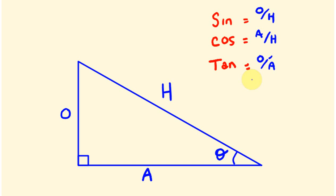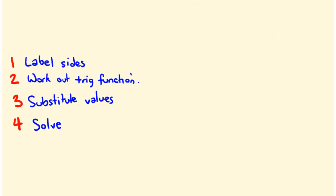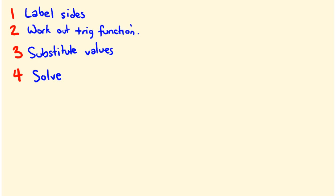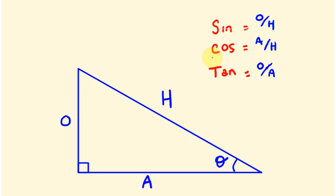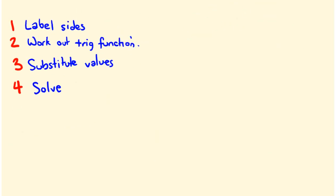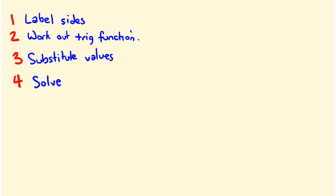So we have theta, and the sides we're going to be playing around with: if we're using the opposite and hypotenuse, we're going to be using sine. Alternatively, if we're using the adjacent and hypotenuse, we'll use cosine. Or if we're using the opposite and adjacent sides, we're going to use tan. So we're going to be using these to solve some unknown sides right now. First off, I'm going to put a list of rules we are going to follow: label the sides, work out the trigonometric function, substitute values in, and then solve our equations.